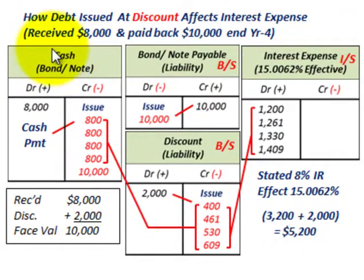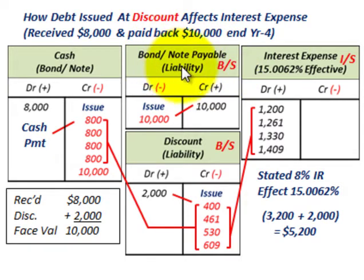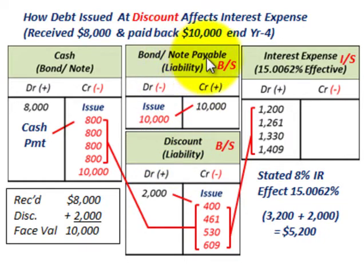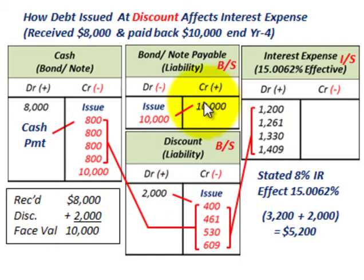Now let's look at how we'd record debt issued at a discount and how it affects interest expense. We received $8,000 up front but have to pay back $10,000 at the end of the fourth year. Set up notes payable as a liability and credit it for $10,000. The cash received of $8,000 is debited. The balancing amount is a discount — a contra account to notes payable — debited for $2,000. So the $8,000 cash debit plus the $2,000 discount debit balances with the $10,000 liability credit. The discount reduces the notes payable carrying value.